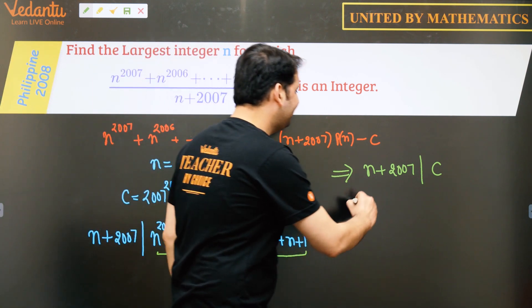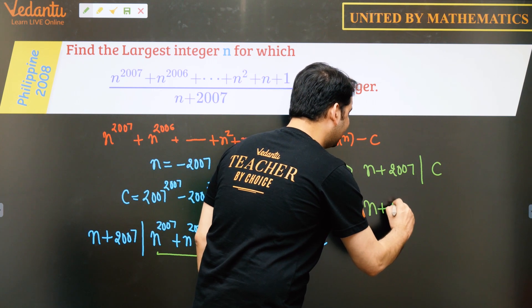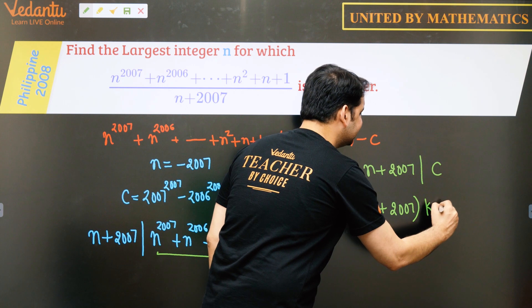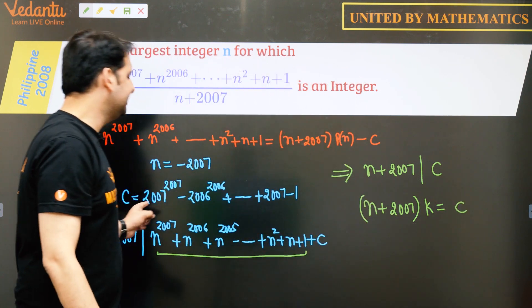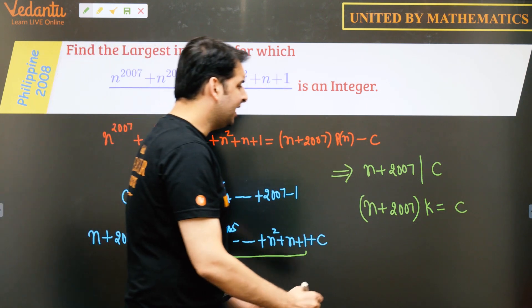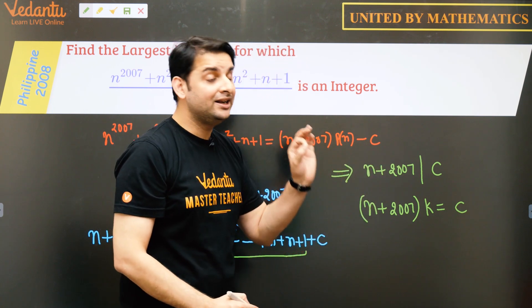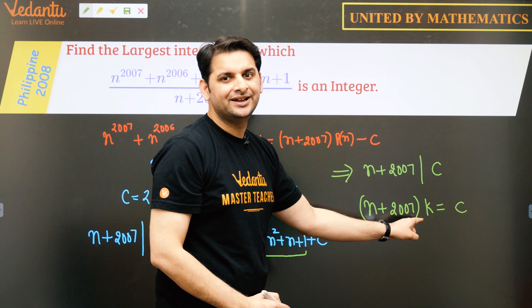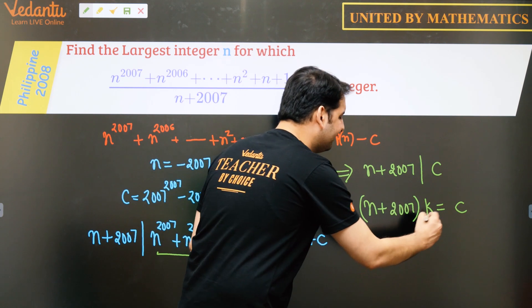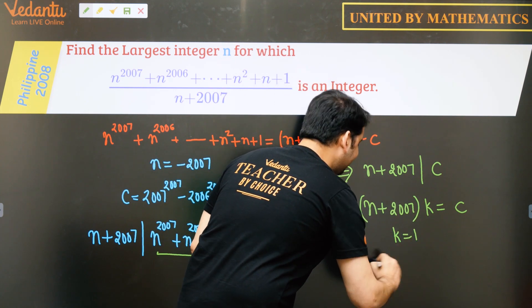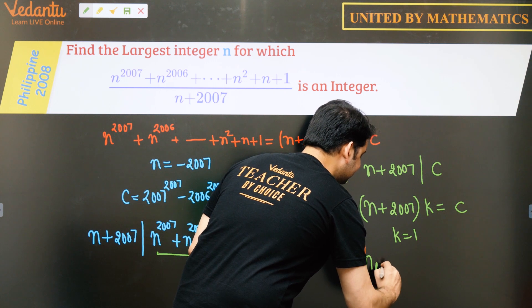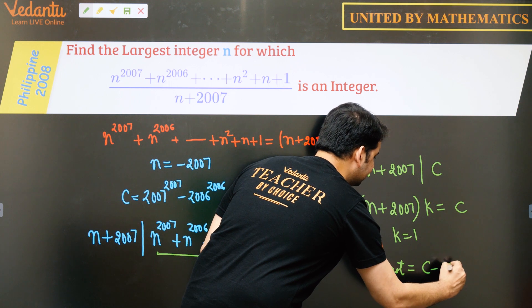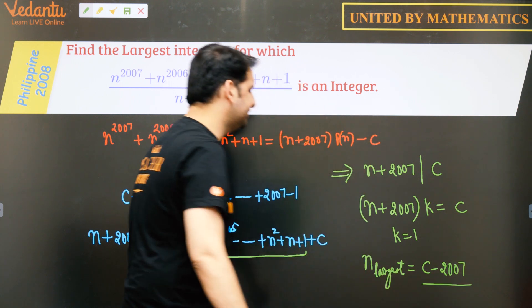So we have n plus 2007 times k is equal to c. So the value of c is known. Now, if I have to find the largest n, that means I have to minimize k. So minimize k would be 1 of course. So n largest, n largest will be c minus 2007 and that is our answer.